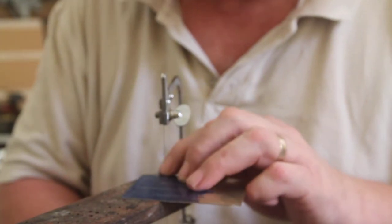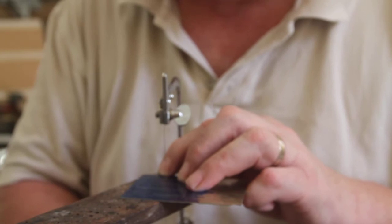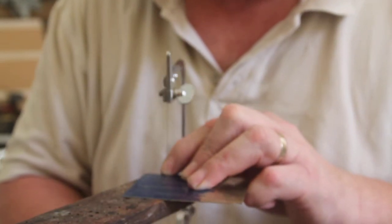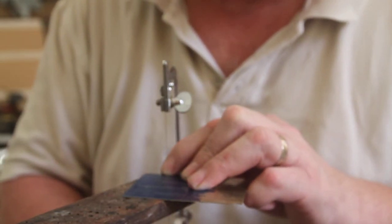Whilst you're sawing you keep to the outside of the line otherwise you've got nothing to file to and you'll find if you're making something to fit it will fall through. Sometimes that's a bonus but most of the time it's a pain.